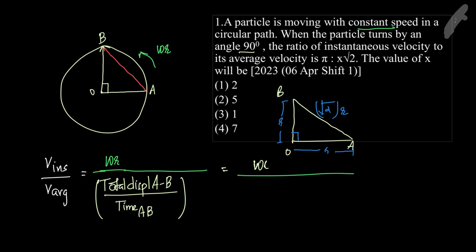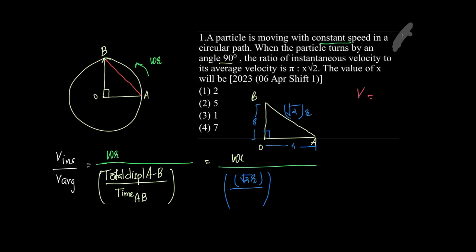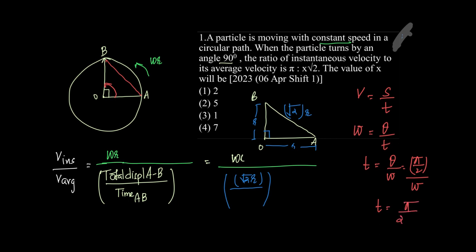Using the relation: angular velocity ω equals angular displacement divided by time, therefore time equals angular displacement divided by ω. Since the object has covered 90 degrees, the angular displacement is π/2. So time t equals (π/2) / ω, which gives t = π / (2ω).